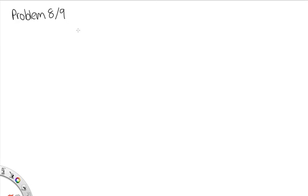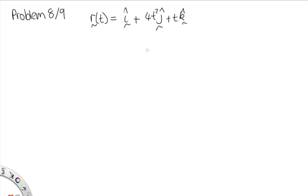Problem 8 for 1121, or 9 for 1131. We've got a particle that moves so that its position is given by r(t) is equal to i plus 4t squared j plus tk. We're asked to write an expression for its velocity and acceleration as a function of time.